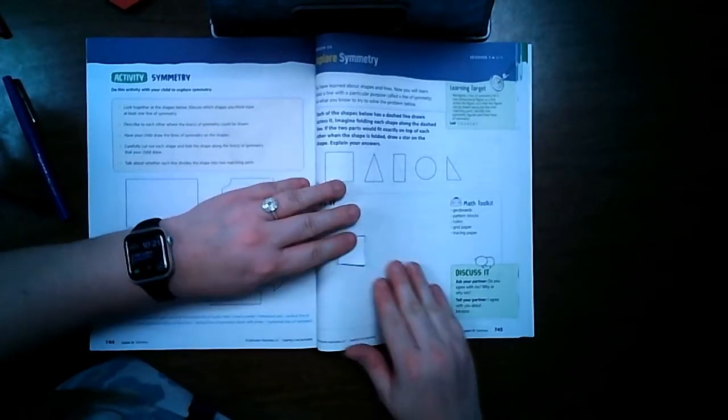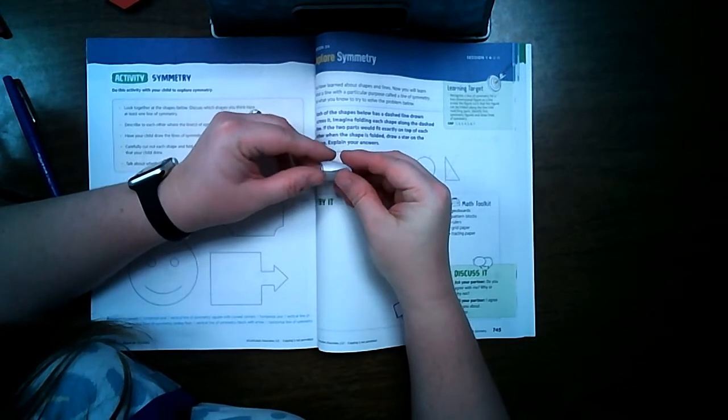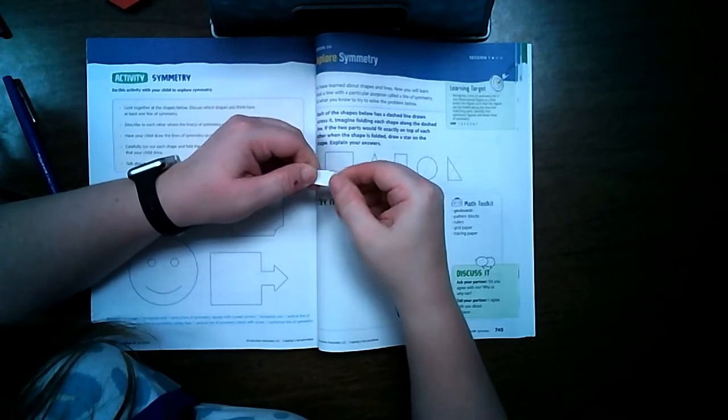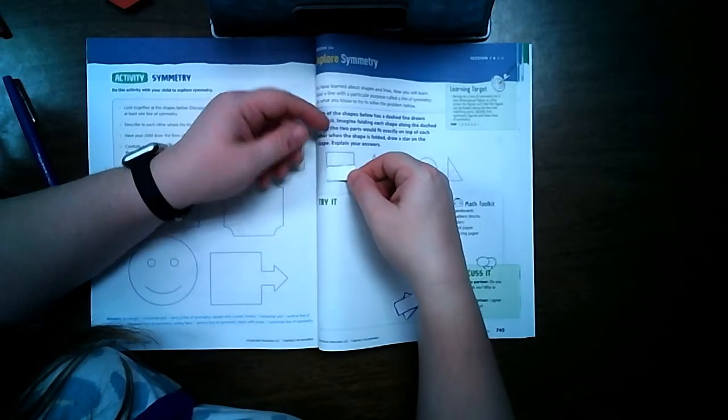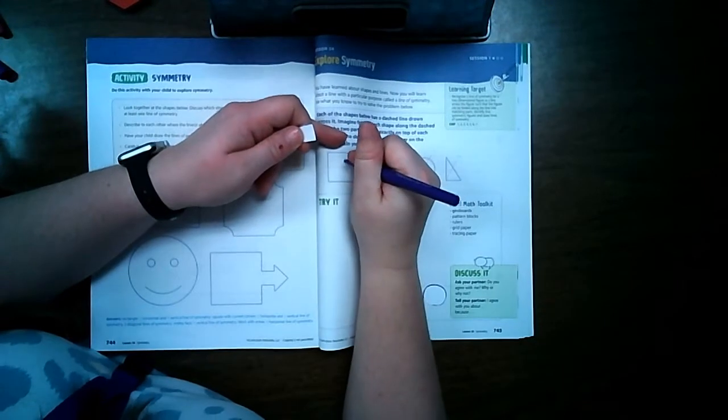So let's start with our square here. If I fold this piece of paper in half, is it a copy of each other? Yes. So that means that this shape is symmetrical.